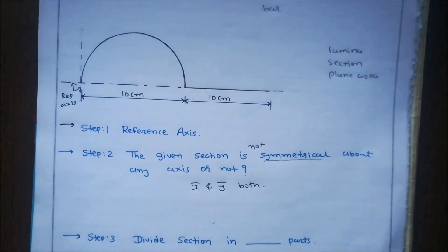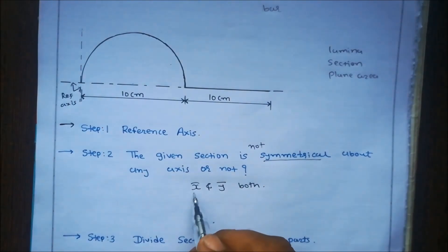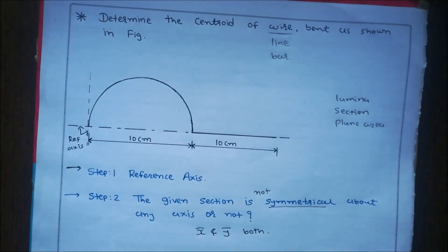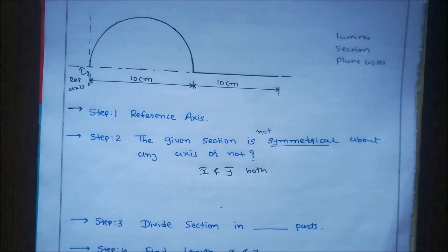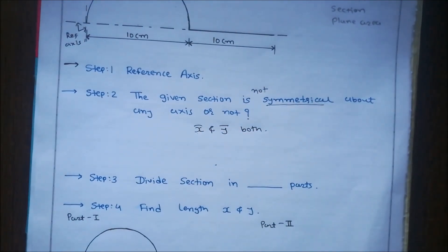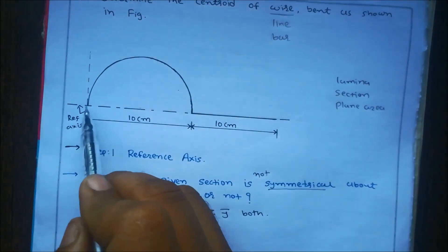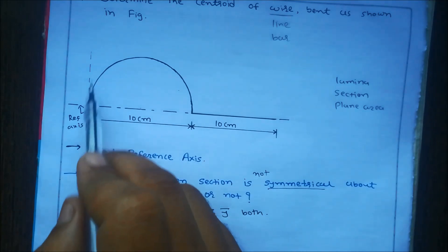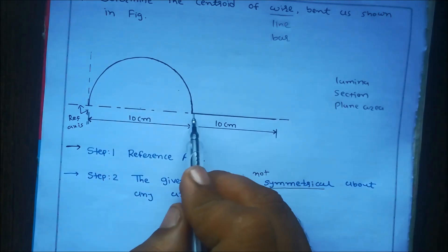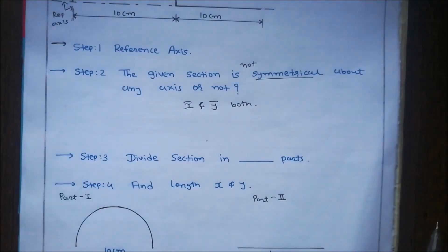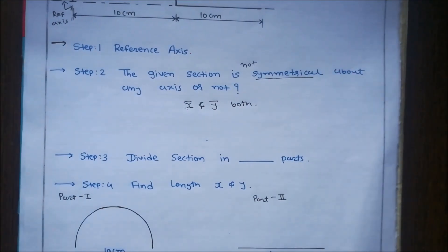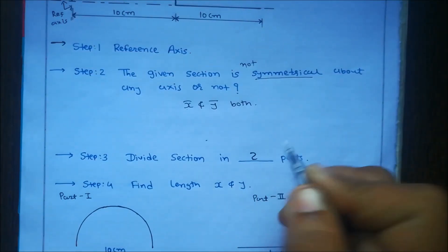In our problem, the given figure is not symmetrical about any axis, so we have to calculate both X-bar and Y-bar. In step number three, divide the section into parts. As shown in the figure, there are two parts: the first shape is a semicircle and the second one is a horizontal line.